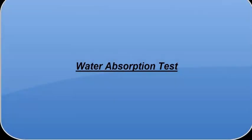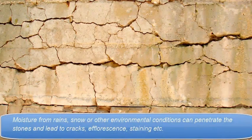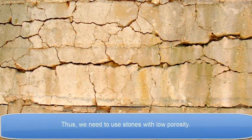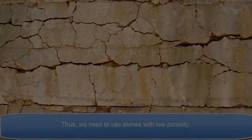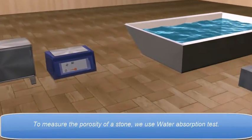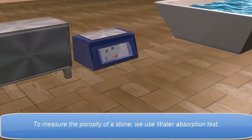Water Absorption Test. Moisture from rains, snow, or other environmental conditions can penetrate the stones and lead to cracks, efflorescence, staining, etc. Thus, we need to use stones with low porosity. To measure the porosity of a stone, we use the Water Absorption Test.